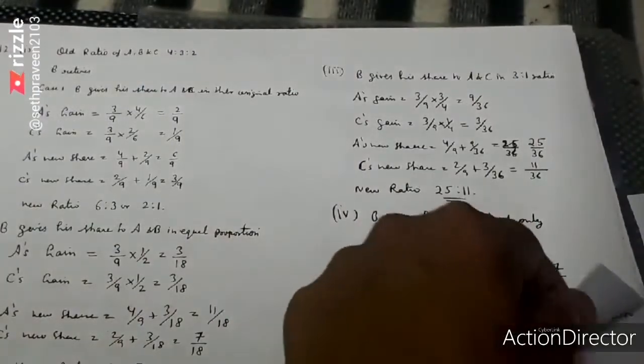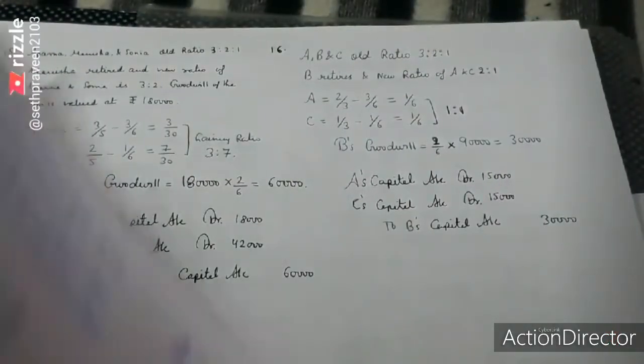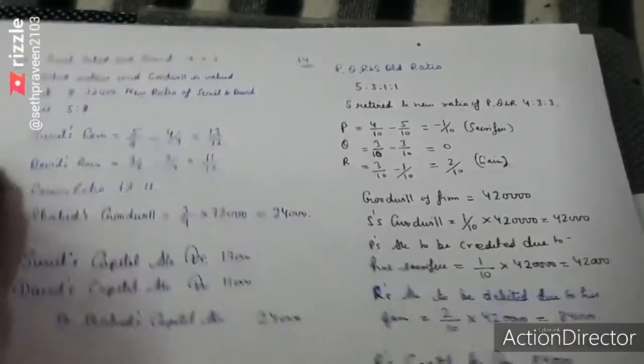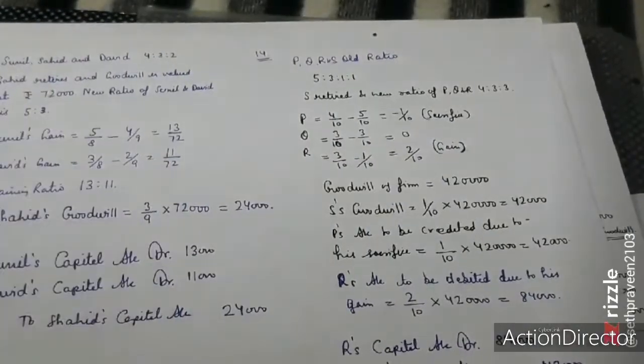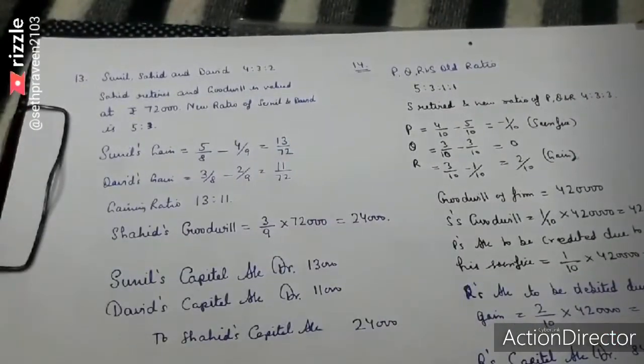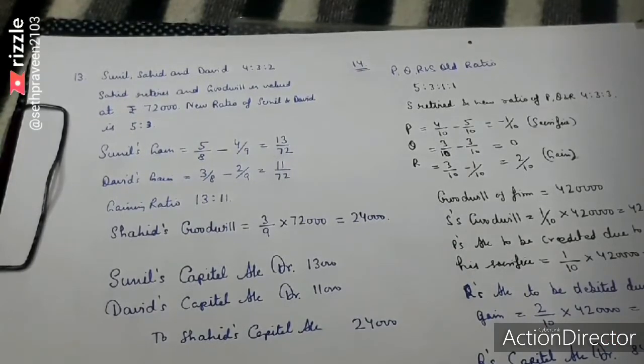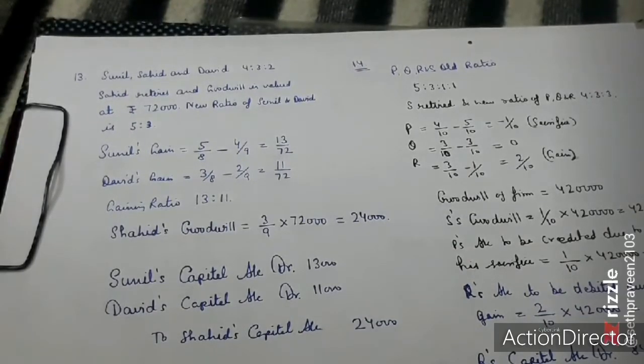This way questions 1 to 12 are all complete. I hope you understood. Before Q13, I'll explain the treatment of goodwill in retirement, then I'll discuss Q13 in the next video. In retirement, we do the adjustment entry for the gaining ratio of remaining partners.